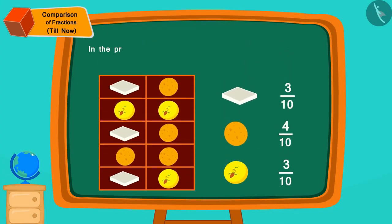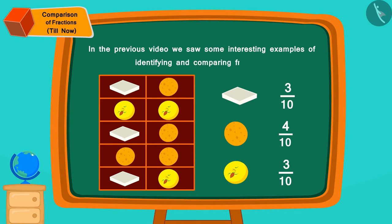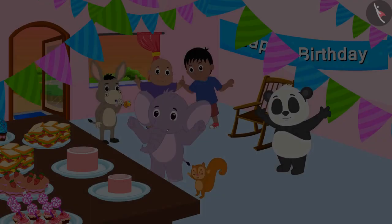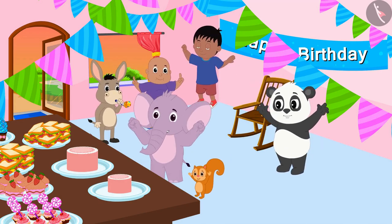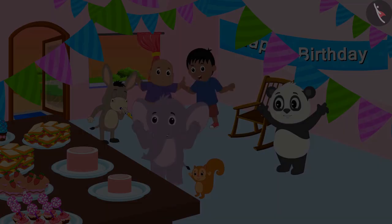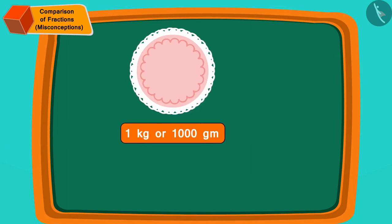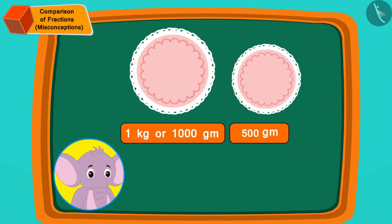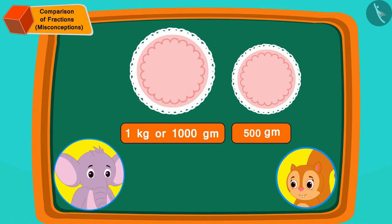Hello children. In the previous video we saw some interesting examples of identifying and comparing fractions. In this video we will see some misconceptions related to this. Today Appu and Chanda are celebrating their birthday together. A 1 kg cake has been brought to celebrate Appu's birthday, and a small 500 gram cake of exactly the same design has been brought for Chanda.